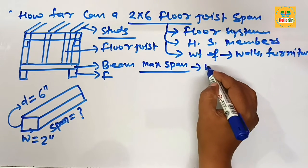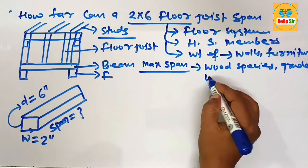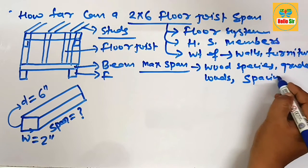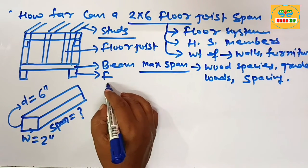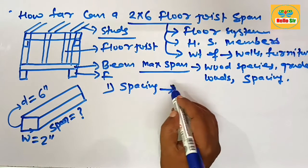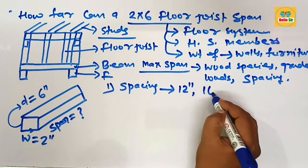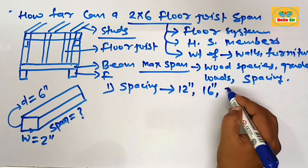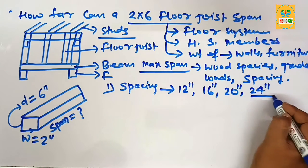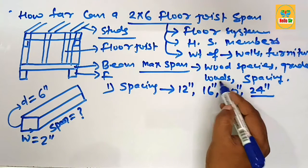Factors like the wood species, the grade of wood, the live load and dead load of a structure, and the spacing between the floor joists. What will be the spacing between the floor joists? The common spacing between floor joists includes 12 inches on center, 16 inches on center, maybe 20 inches on center, or either 24 inches on center. This is the spacing between the floor joists.